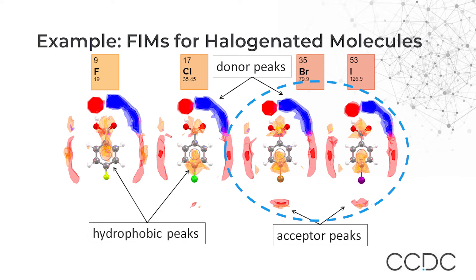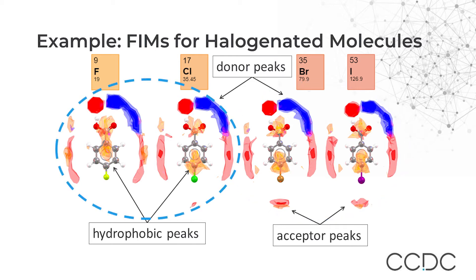Looking at the iodo and bromo derivatives, it indicates that the propensity of these molecules to form halogen bonds is higher. In contrast, the chloro and fluoro derivatives show little or no acceptor propensity opposite to the halogen, correlating with the known behavior of organic chlorine and fluorine. The hydrophobic propensity region above and below the phenyl rings shows an increase for fluoride, highlighting the preference of fluorine to stack with hydrocarbons.